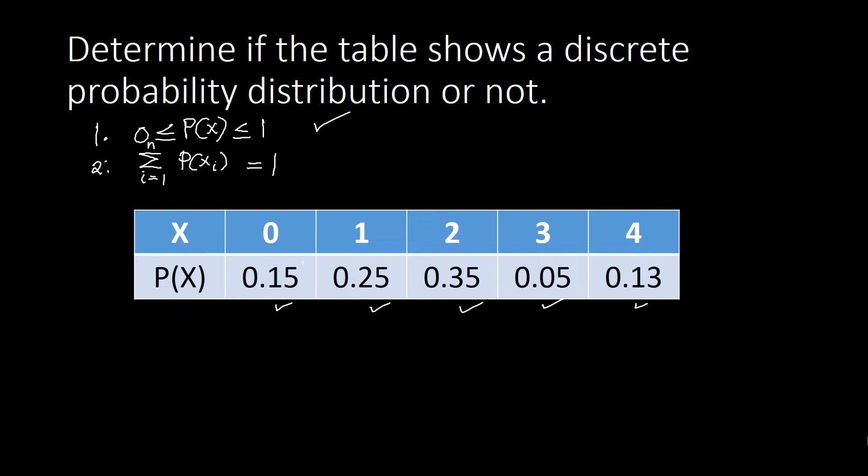So adding up this one here: 0.15 plus 0.25 plus 0.35 plus 0.05 plus 0.13. This is just equal to 0.93, in which that's not equal to one, so your second property is not satisfied at all.